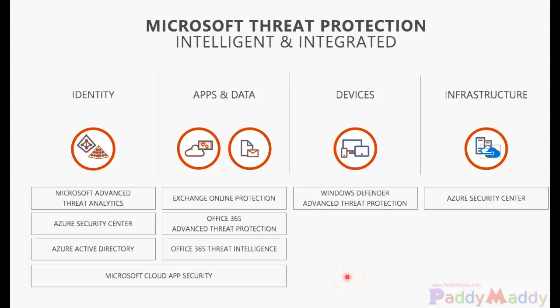Azure Security Center bubbles up threats and security recommendations, as we mentioned in the previous lesson. But on top of that, ATP gives you even more information — it's a consolidated view where you can see not only Security Center recommendations but also recommendations across other services using the logs.